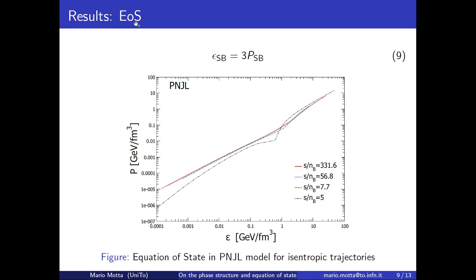I show you the equation of state of the system. Again, at low chemical potential, the equation is smooth, but at high chemical potential, the equation has a discontinuity.